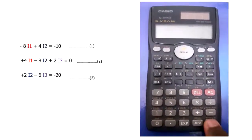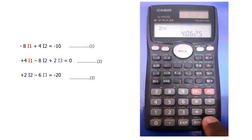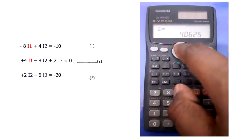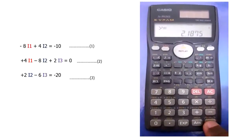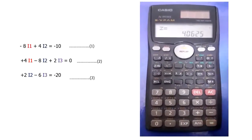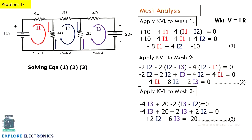So if we give these values, it will directly give the values of X, Y, and Z. Here, X is I1, Y is I2, and Z is I3. After solving these three equations, we get I1 as 2.3437 amps, I2 as 2.1875 amps, and I3 as 4.0625 amps. Thank you.